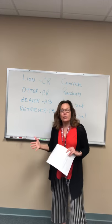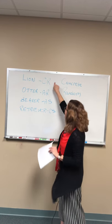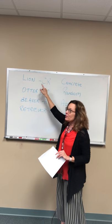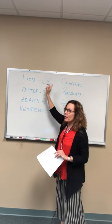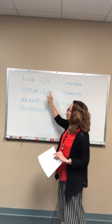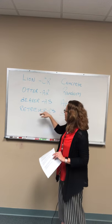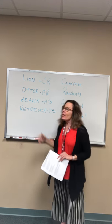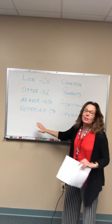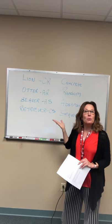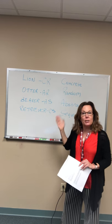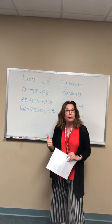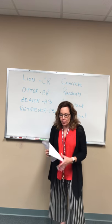When we put them together we see learning styles or personality types: concrete random is the Lion, abstract random is the Otter, abstract sequential is the Beaver, and concrete sequential is the Retriever. The animal names are just a way to help clients remember — it's easier to say 'I'm a Lion' than 'I'm concrete random.'